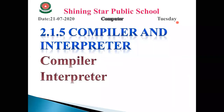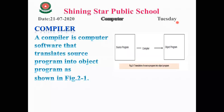The next topic is compiler and interpreter. Both the compiler and interpreter are programs used for translating high-level language programs into low-level languages. A compiler is a computer software that translates the source program into an object program. The source program consists of statements written in a high-level language.